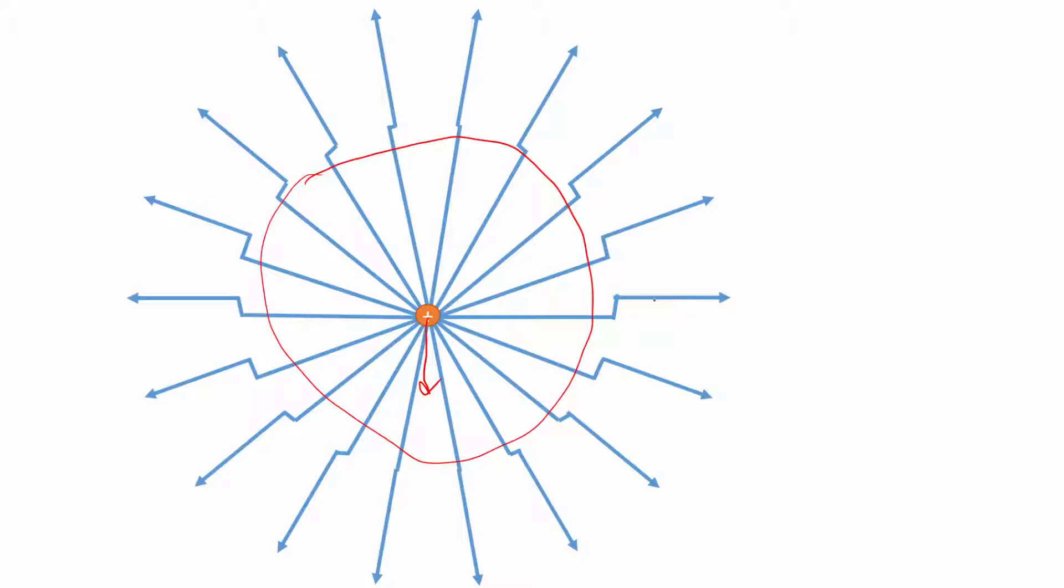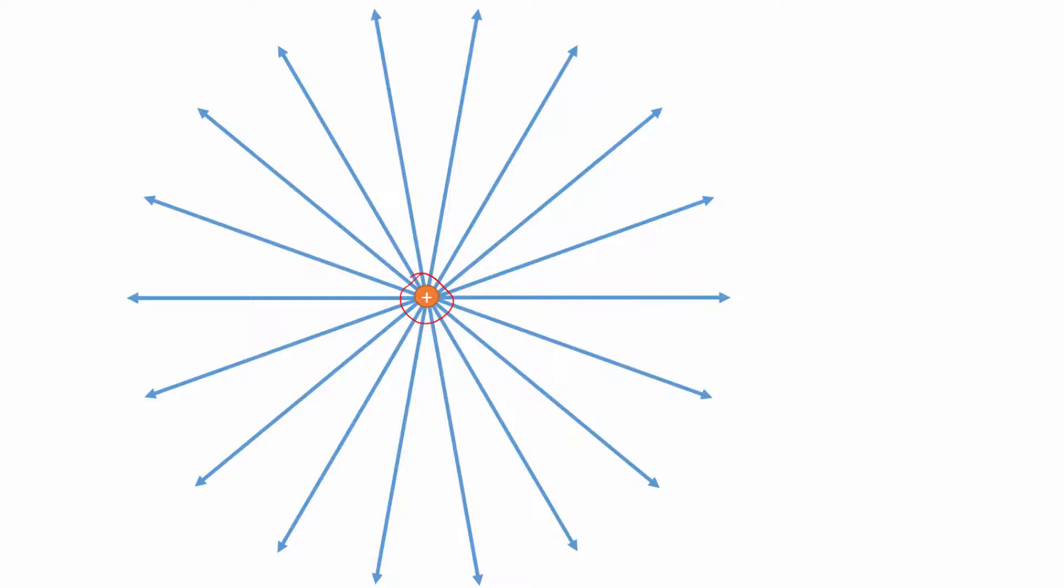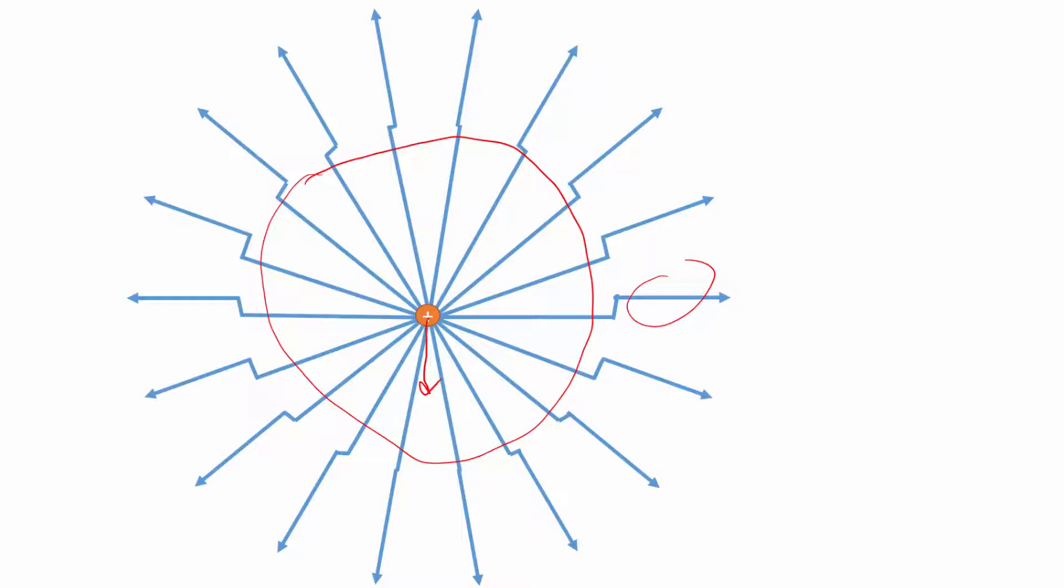But further out, it's pointing to where it used to be. These lines out here are not pointing back to where it is now, but where it used to be. And the reason is because electric fields cannot change faster than the speed of light. So if these things are more than speed of light times time away from when the thing was accelerated in the middle, they haven't had time to respond yet to what is happening. They're still pointing back to where it happened. So there's a kink which will move steadily out at the speed of light.